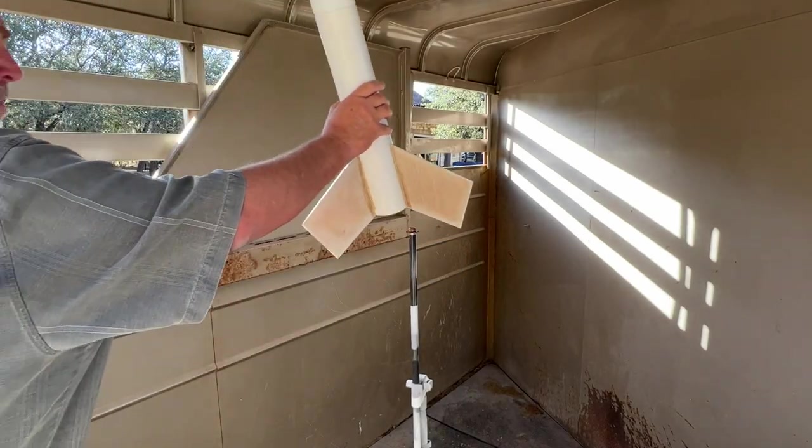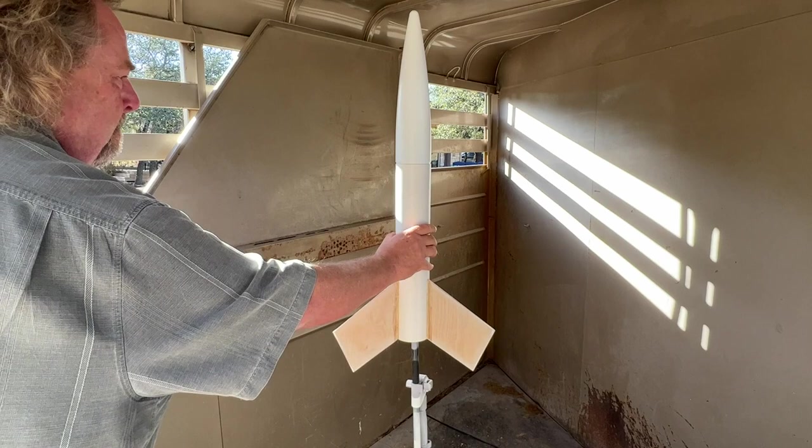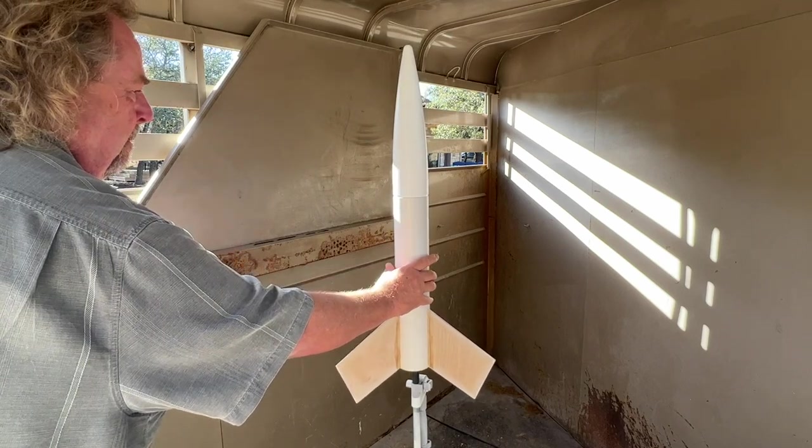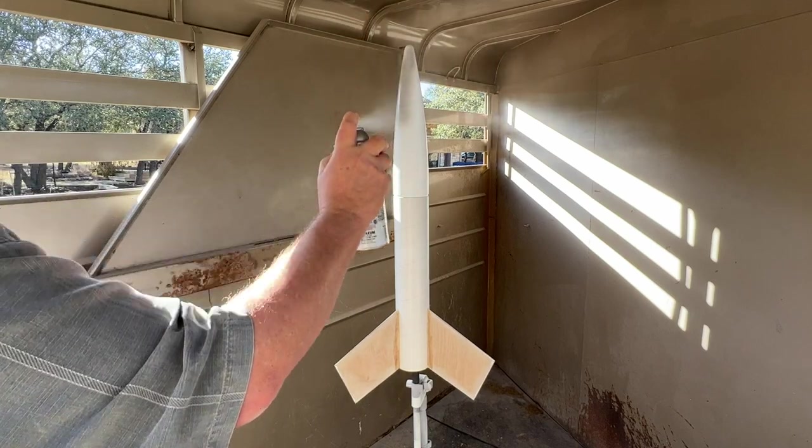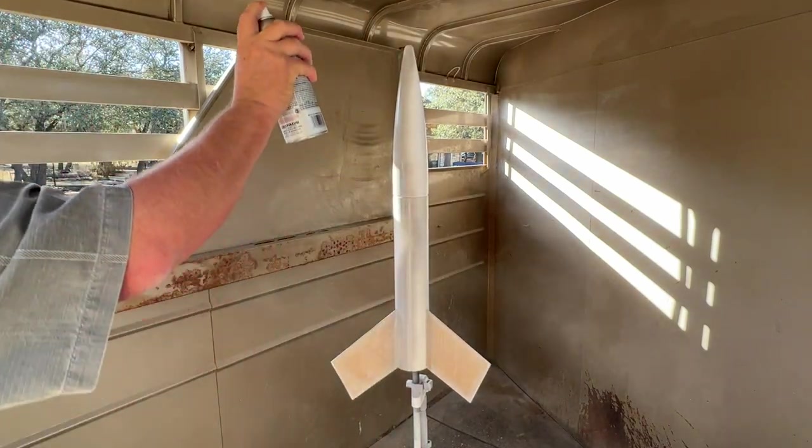Our first step will be to prime the model. As I noted earlier, I like to use the Rust-Oleum gray automotive primer for just about anything. It's a relatively quick drying primer and it's readily available at Home Depot.